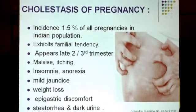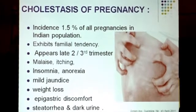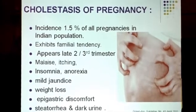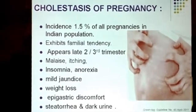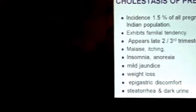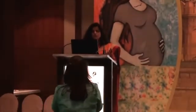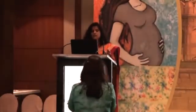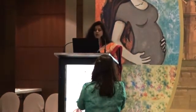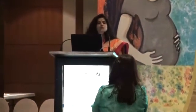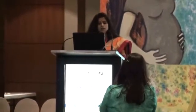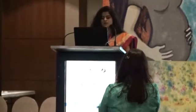Coming on to cholestasis of pregnancy, the incidence is 1.5% of all pregnancies in the Indian population, and because of estrogen sensitivity it exhibits a familial tendency. It appears usually in the late second and third trimester. It is associated with common findings of liver derangement like malaise. Itching is very prominent, along with insomnia, anorexia, and mild jaundice, which may not occur in all patients.